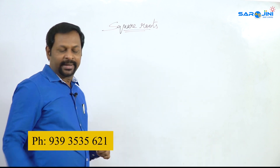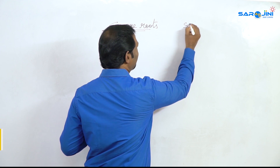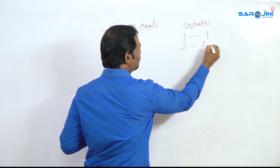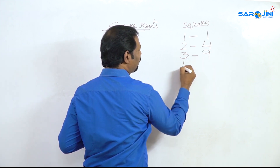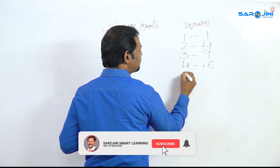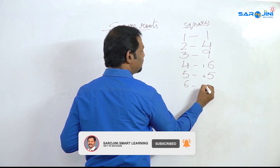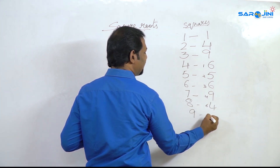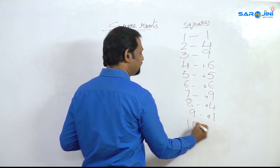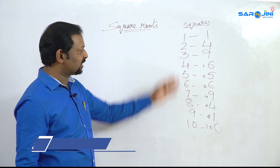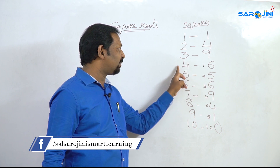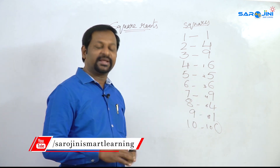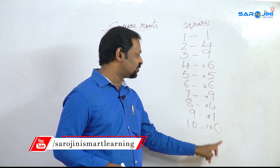Square root. Square root is one of the topics. The first thing is that you have to know the square root table. 8 squared is 64, 9 squared is 81, and 10 squared is 100. You can focus on single digits and double digits. You can focus on unit digits — the numbers 1, 4, 9, 6, 5.